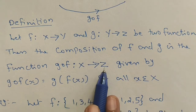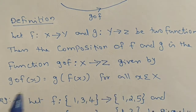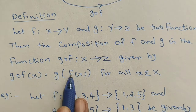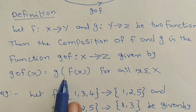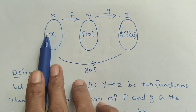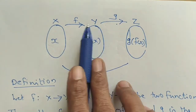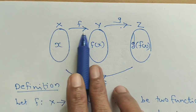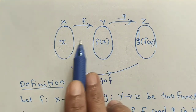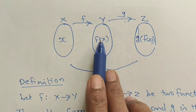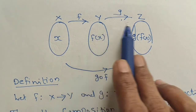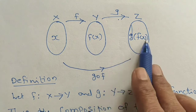We have g of f of x. We add x to the set: x maps through f to get f of x, which is in y. Then we apply g to f of x to get the result in z. So the composition takes x through y to z.